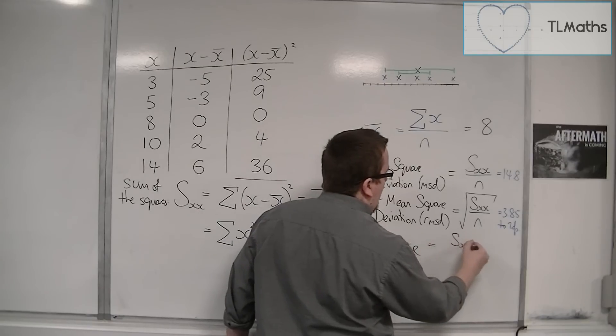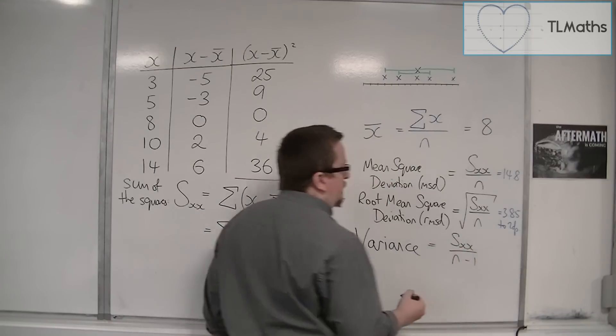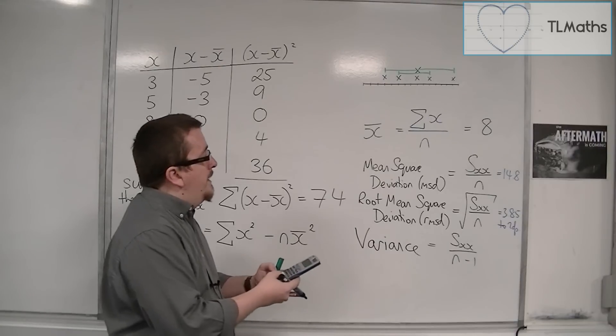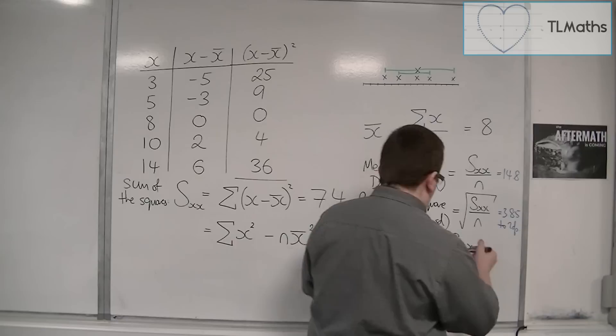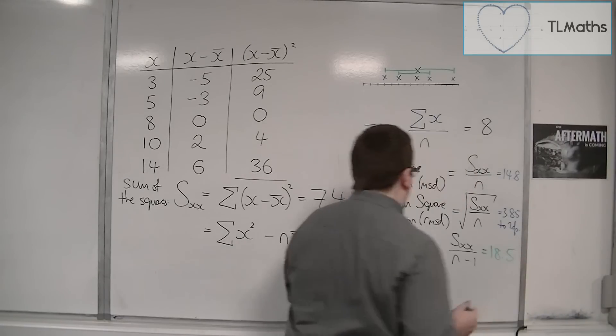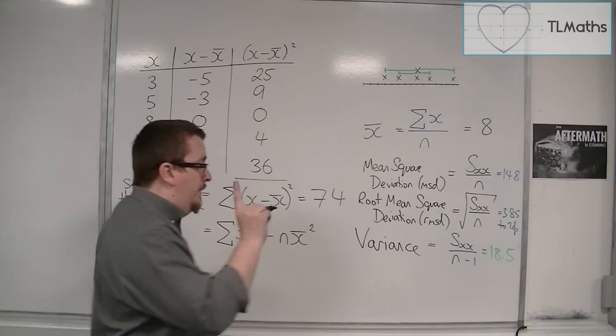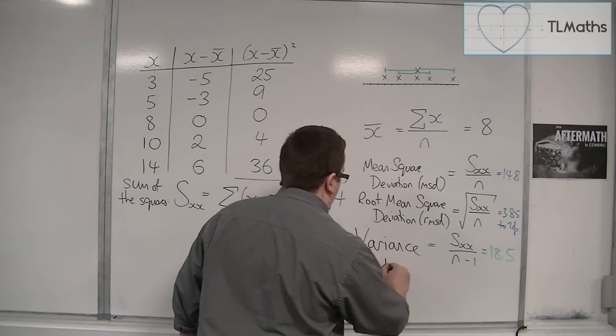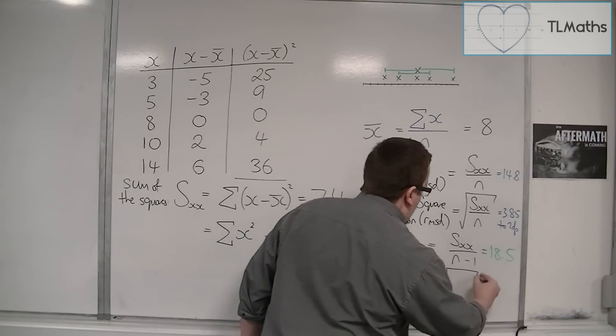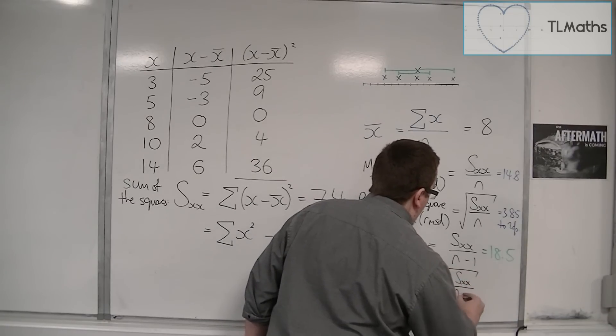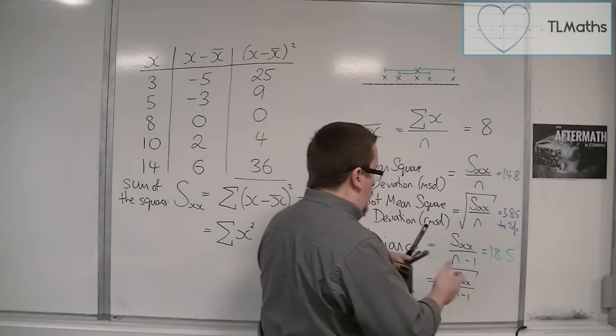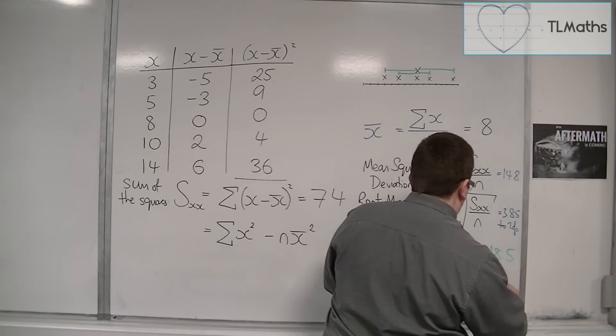So the variance is SXX divided by n minus 1. So that's our 74 divided by, in this case, 4. And that's 18.5. And the square root of this is the standard deviation. So the standard deviation is the square root of SXX over n minus 1. So square root that answer, and that gets me 4.30 to 2 decimal places.